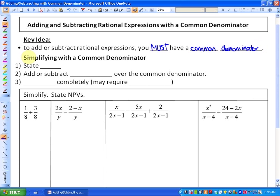When we simplify with a common denominator, the first step is to state the non-permissible values, or values of the variable that make the denominator equal zero. Next, we add or subtract the numerators over the common denominator. And finally, we simplify completely, which may require factoring.